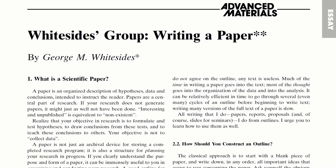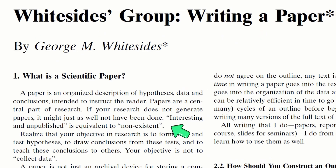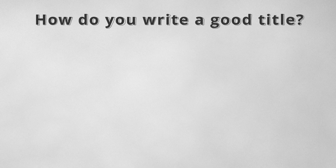Why should we be worried whether other researchers cite our work? It is because the science we do in our labs should be communicated to other researchers and non-researchers so that they can benefit from our work. Professor George Whitesides puts it in his paper this way: interesting and unpublished is equivalent to non-existent.